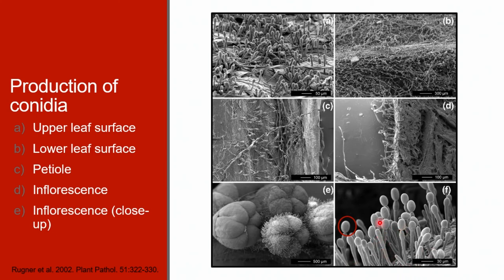A single conidiophore will produce one conidium per day for 30 days. Under optimal conditions, a single conidium can grow to a reproductive colony in seven to 21 days, and each colony can produce 30 conidiophores. Each conidiophore can then produce one conidium a day for 30 days. Therefore a single conidium results in 900 spores, and each of those spores produces 900 spores, so two generations of a single spore can result in 810,000 spores — but only if environmental conditions are optimal.